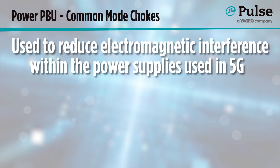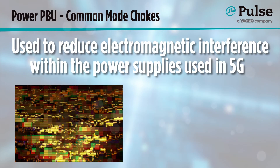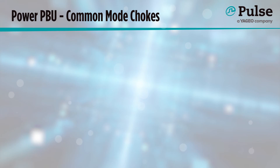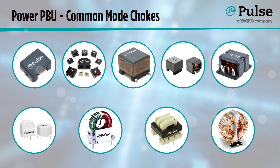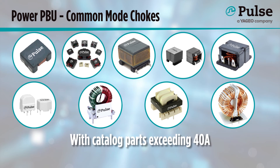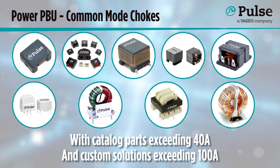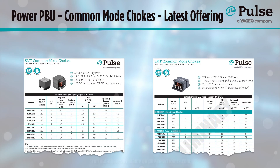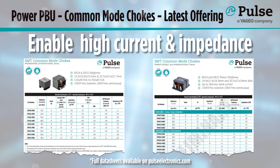Common mode chokes are used to reduce electromagnetic interference within the power supplies used in 5G. This is critical to ensure that noise does not couple to the communication channels. Pulse manufactures a wide range of surface mount and through-hole common mode chokes, with catalog parts exceeding 40 amps and custom solutions exceeding 100 amps. Our latest catalog offerings enable high current and impedance in surface mount platforms.